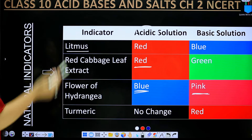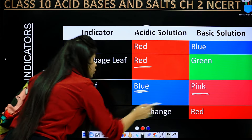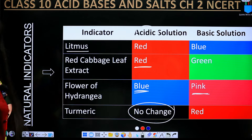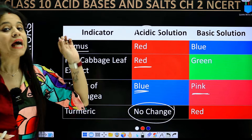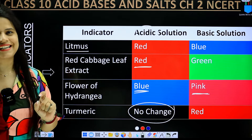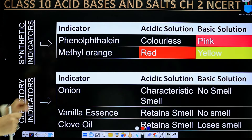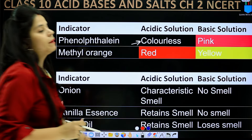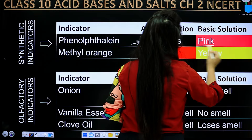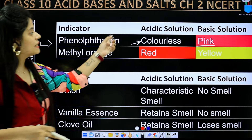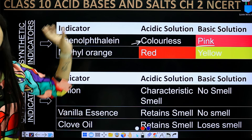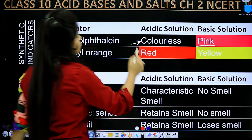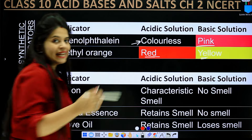For turmeric: if you add it in an acidic solution, there is no change — it stays yellow. But if you add turmeric in a basic solution, it turns red. For synthetic indicator phenolphthalein: in acid it is colorless, and if you add a basic solution it turns pink. Even if you have made it pink and then add more acid, it will become colorless again. For methyl orange: in acid it turns red, and in basic solution it changes to yellow.